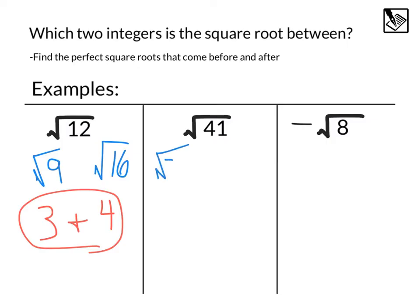And then 7 times 7 is 49. So we'll do the square root of 49. 41 is right in between those two numbers, 36 and 49. So we can take those number values and say square root of 41 is between 6 and 7.